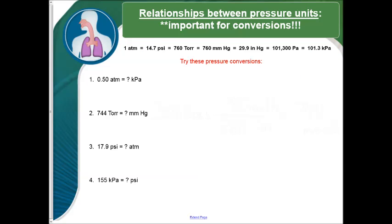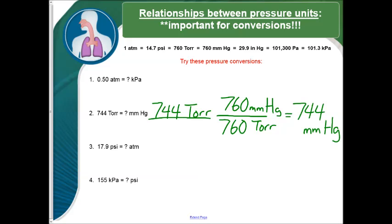Okay, our next example, we're starting with 744 torr. We need to convert that to millimeters of mercury. So we start with 744 torr. We get our two equalities up on the top. 760 millimeters of mercury is the same as 760 torr. And when we do the math, we get 744 millimeters of mercury.